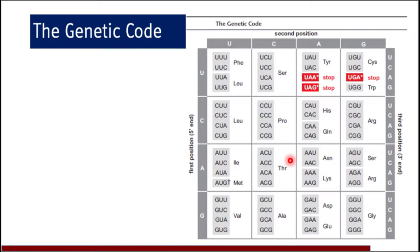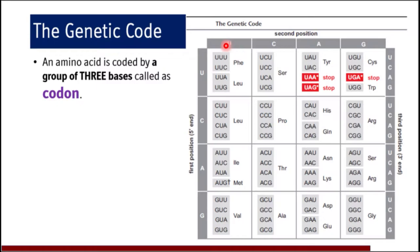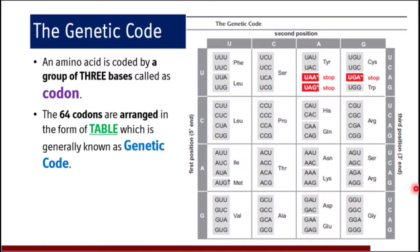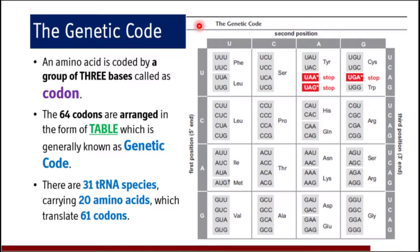An amino acid is coded by a group of three bases called a codon. The codon is a triplet or a set of three bases. For example, UUU or UUC are codons which code for phenylalanine. There are 64 combinations of codons arranged in a table called the genetic code, which is a unique code for a given species. There are 31 tRNA species which carry 20 amino acids and translate 61 codons.